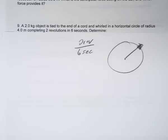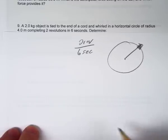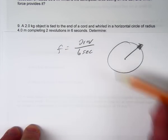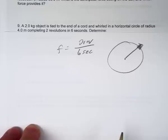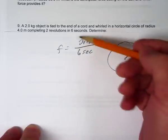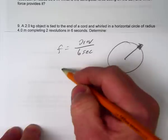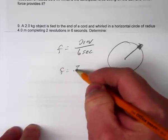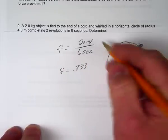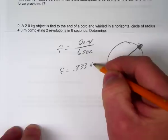The standard unit is revolutions per second. We have two revolutions in six seconds, so you just have to simplify that. In order to bring this into Hertz, the standard unit of frequency, we take two and divide it by six, which gives one-third. So the frequency is 0.333 repeating Hertz.